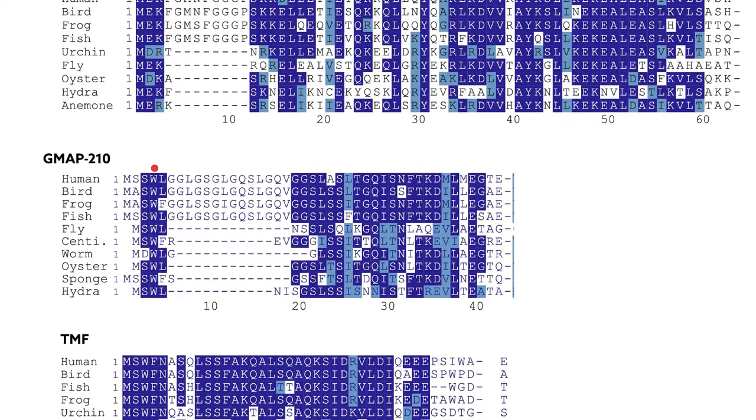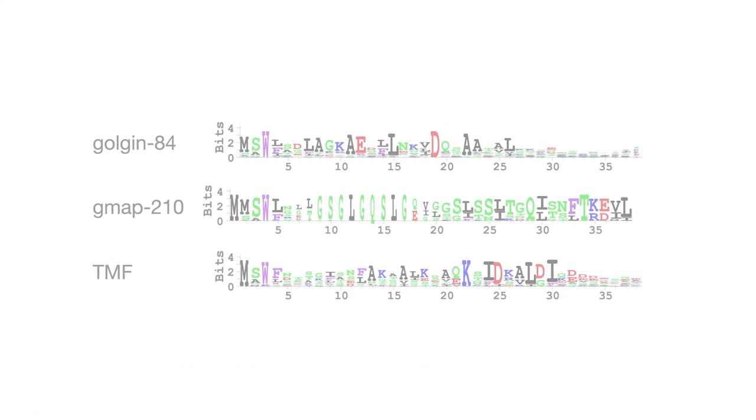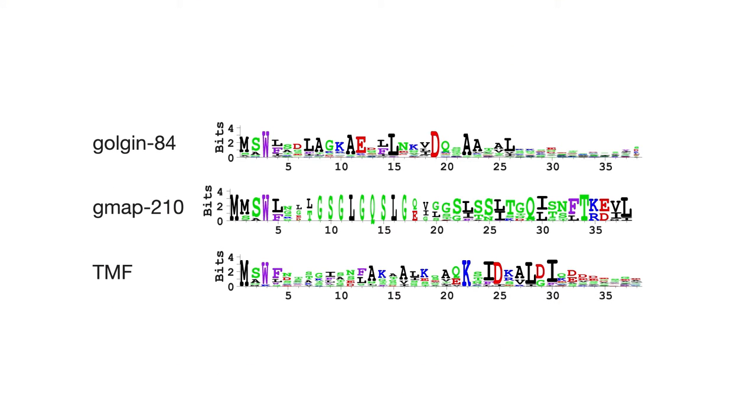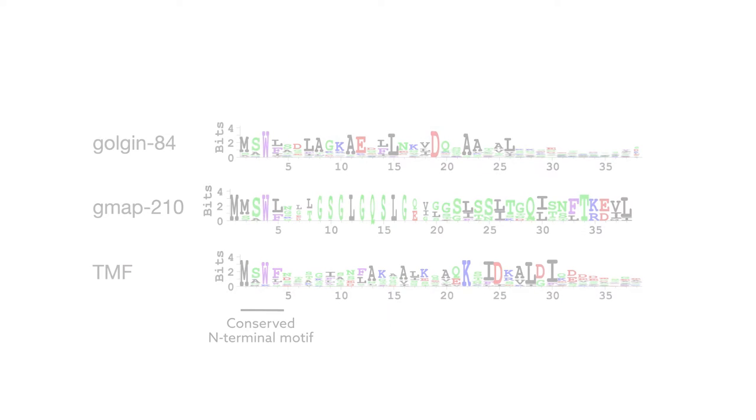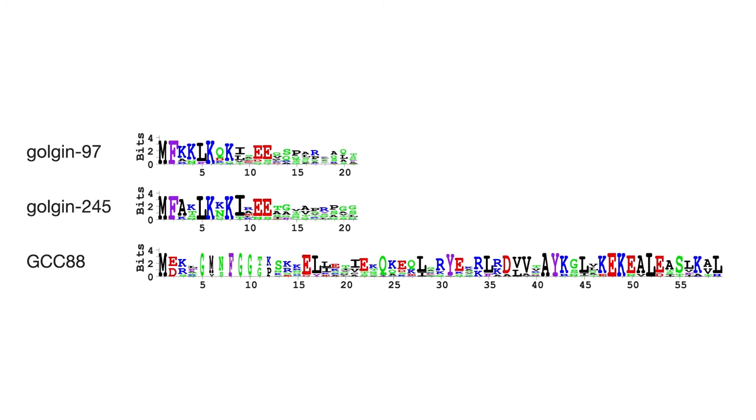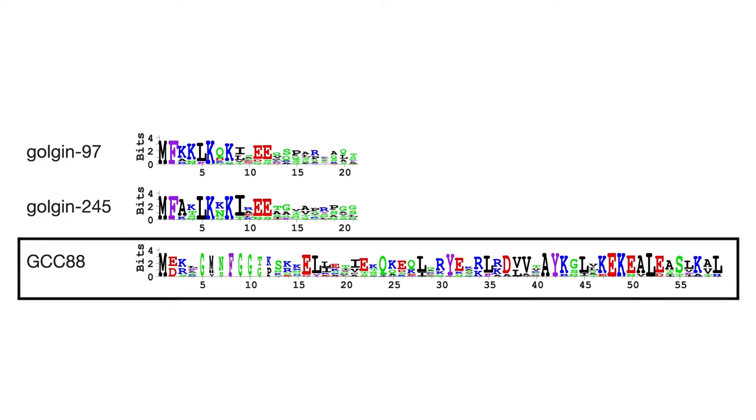When the team examined the sequences in more detail, they found that the three Golgins that capture vesicles traveling within the Golgi all shared a short N-terminal motif. Of the three Golgins that grab cargo coming from endosomes, two had nearly identical postal code domains, but the third was very distinct.